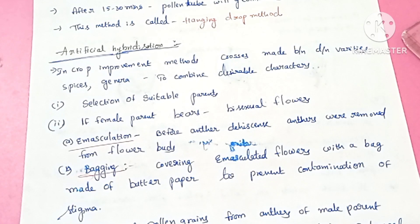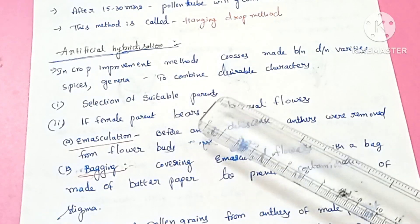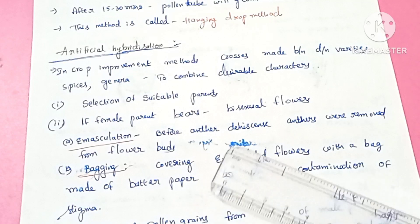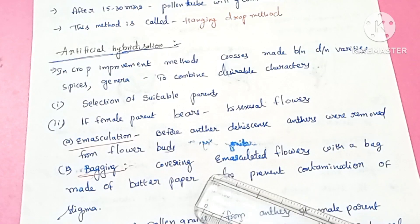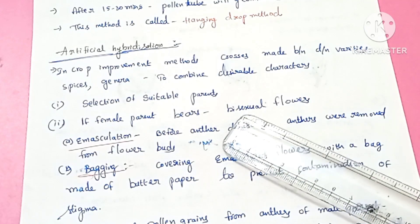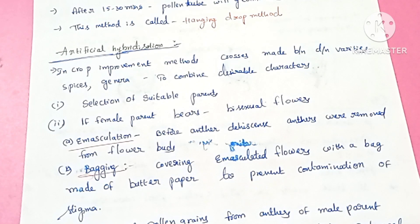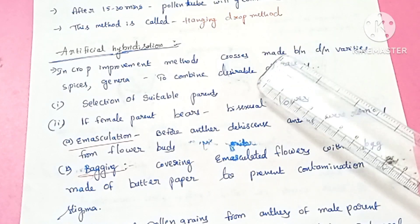Artificial hybridization is a crop improvement method. Two different plants with desirable characters — which may be the same species, different species, or different genera — are selected. Unlike natural pollination which occurs without human involvement, in artificial hybridization we select two parents and cross them to combine desirable characters. The desirable characters are also observed in the coming generations.